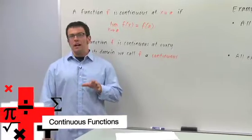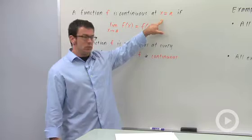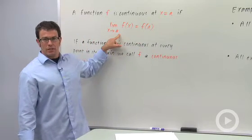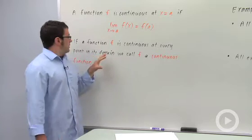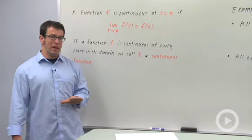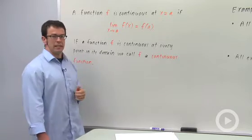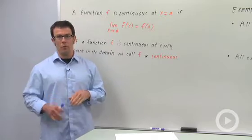We defined the idea of continuity before. A function f is continuous at a point x = a if the limit as x approaches a of f(x) equals f(a). But we have a further definition: if a function f is continuous at every point in its domain, then we call f a continuous function.